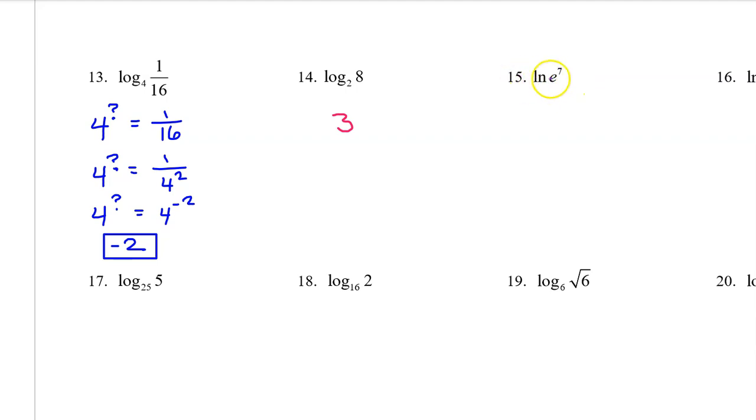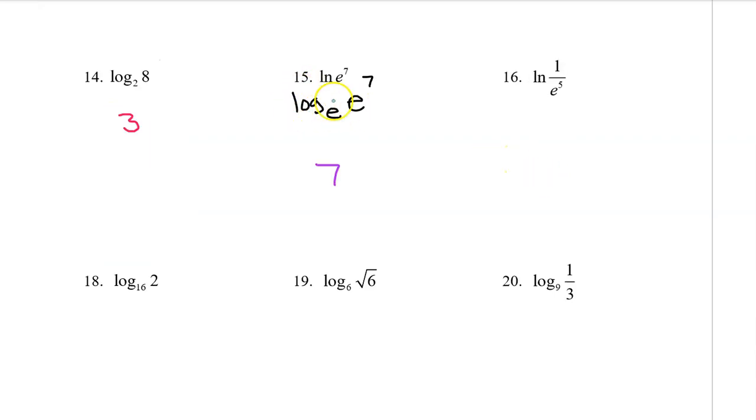Natural log and base e cancel each other out. So the answer is going to simply be 7. I'm leaving space to go ahead and show a little bit of my thought process. Remember that natural log really means log base e. So this original problem is really log base e of e to the 7th power. And we've learned that log base e and base e cancel each other out because these are inverse operations, leaving just the 7. I don't want you to have to show this step. So just understand that natural log and base e will cancel each other out. Now let's rewrite this as natural log of e to the negative 5 power. Now it becomes just like number 15. The natural log and the base e cancel each other out and we are left with negative 5.